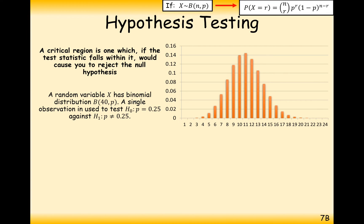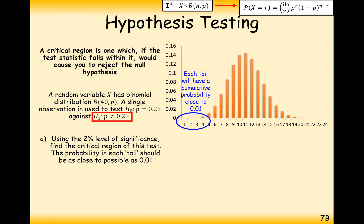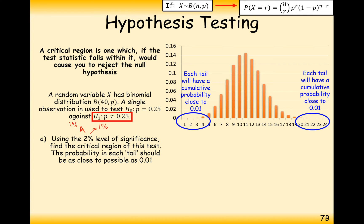The questions are: using the 2% significance level, find the critical region of this test. The probability in each tail should be as close to 0.01 as possible. Because we've got a probability not equal to 0.25 as our alternative hypothesis, we're going to split up this 2% into two 1% tails. In each tail, we're looking to find the closest cumulative probability as close to 0.01 as possible.